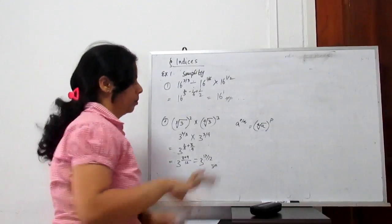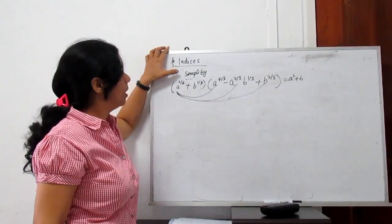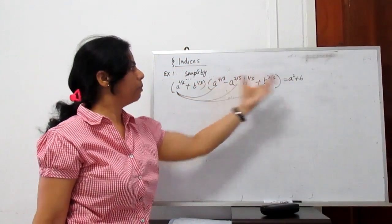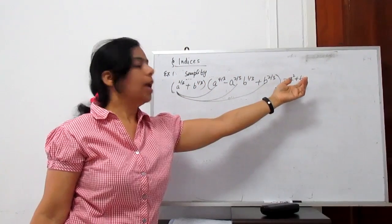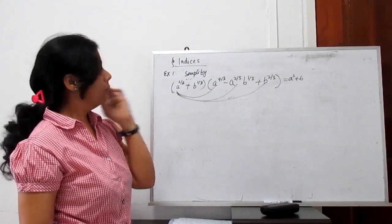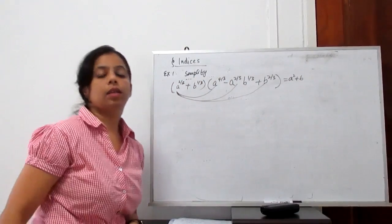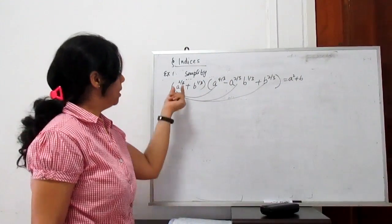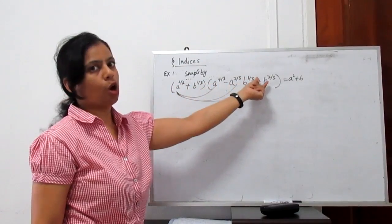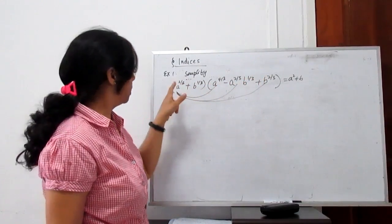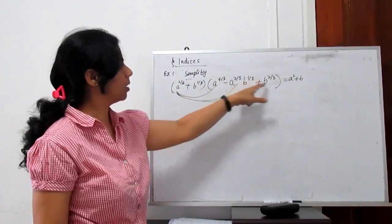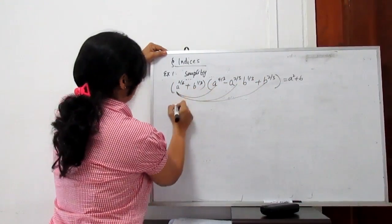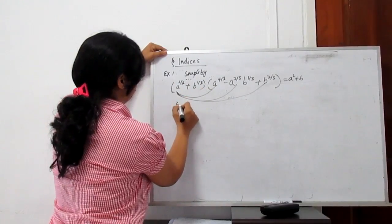Here are some more problems. Prove that the left hand side simplifies to give A squared plus B. We have two brackets — we already learned in algebra how to multiply brackets: each term multiplies with each term of the other bracket. So A to the power 2 by 3 first multiplies each term.